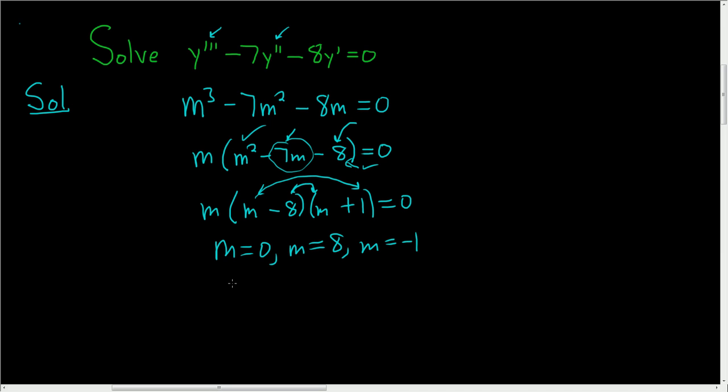And now we can go ahead and write the answer down. So the answer is of the form y equals c1 e to the 0x plus c2 e to the 8x plus c3 e to the negative 1 times x.